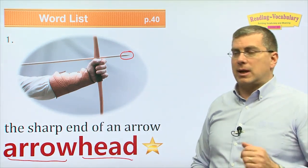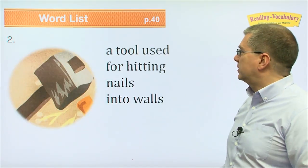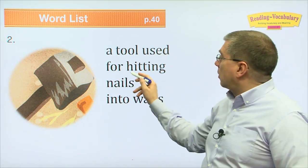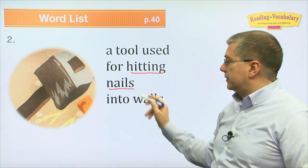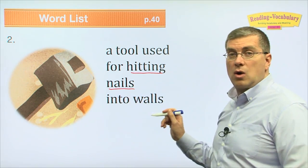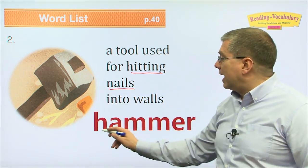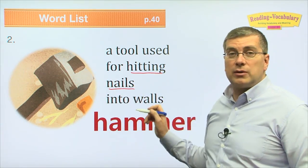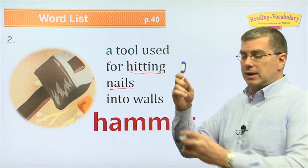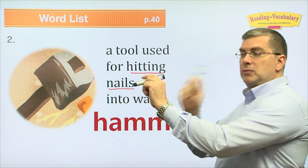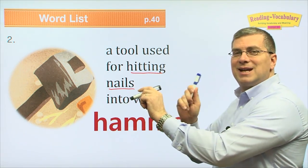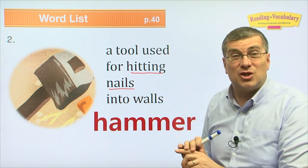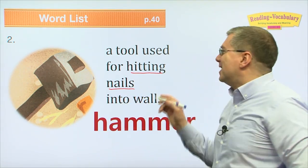Number two: what type of tool is this? A tool used for hitting nails into walls. Of course it's called a hammer. A hammer is used to hit nails into walls. Look, I'm pounding it into the wall — be careful using a hammer, you don't want to hit your finger!